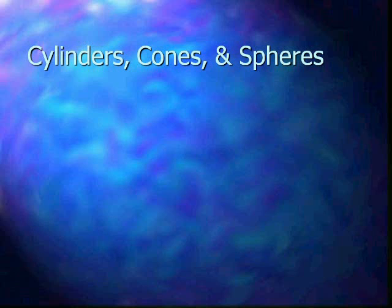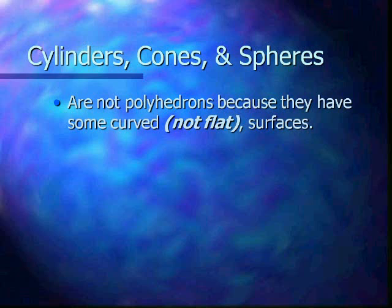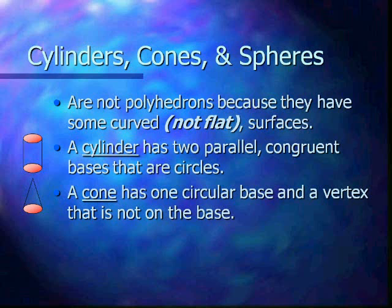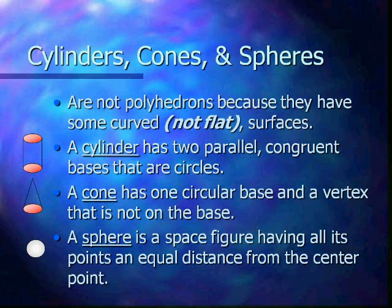Now also we have cylinders, cones, and spheres. They are not polyhedrons because they have some curved, that means not flat, surfaces. A cylinder has two parallel congruent bases that are circles. A cone has one circular base and a vertex that is not on the base. And a sphere is a space figure having all its points an equal distance from the center point.